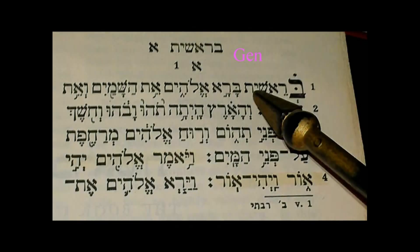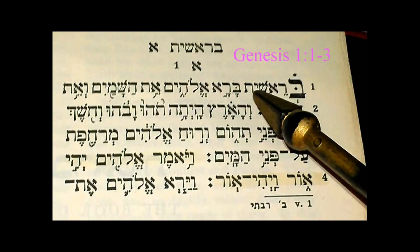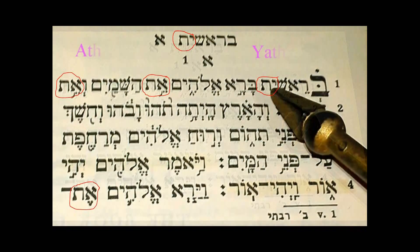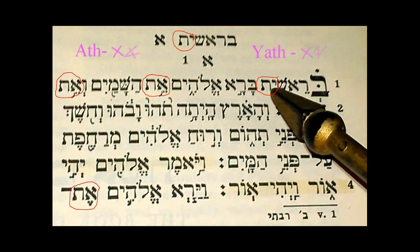This here is Bereshiath verses 1 through 3 and a little bit of verse 4. What I want to show you here, circled, is two words: Ath, which is Aleph Tav, and Yath, which is Yod Tav. And you can see how many times, just within the first three and beginning of four scriptures, how many times these words are used.